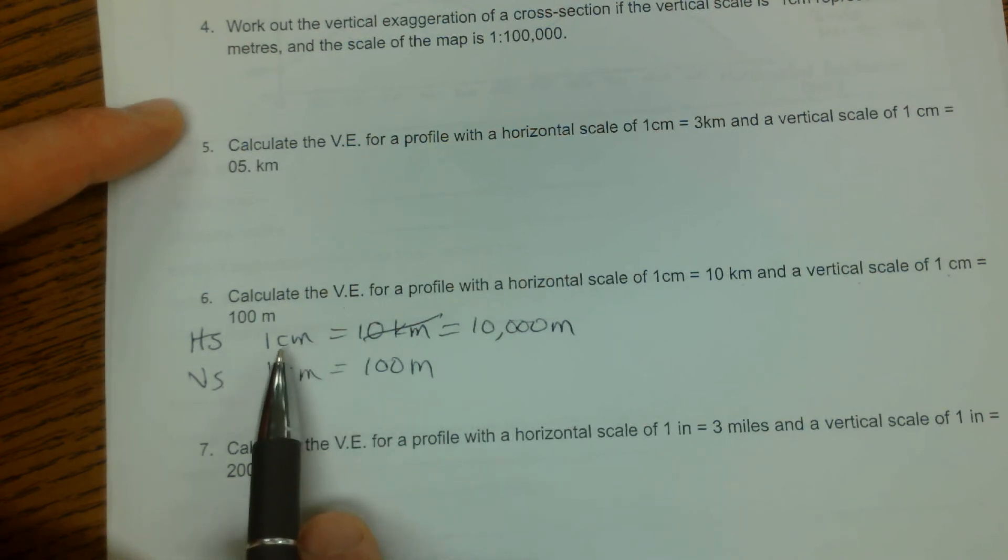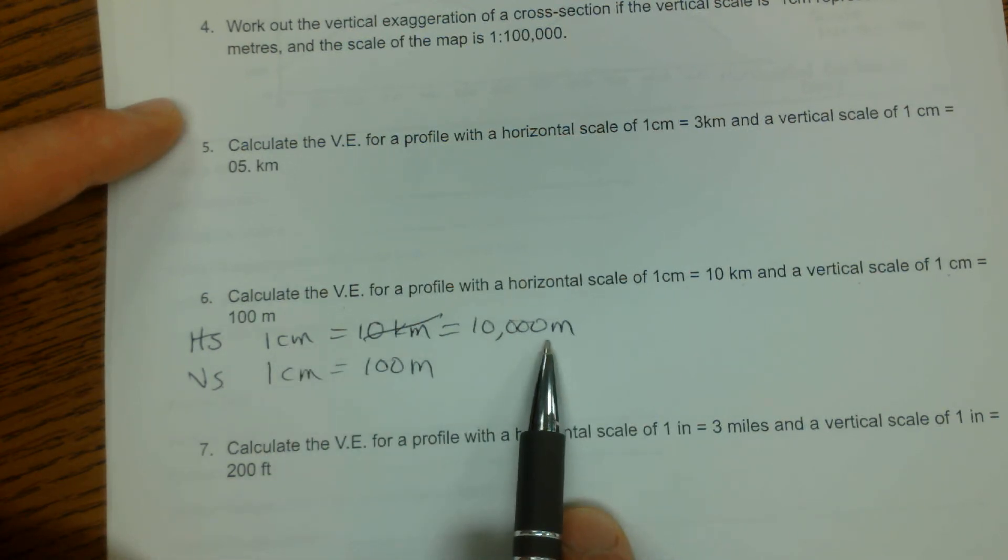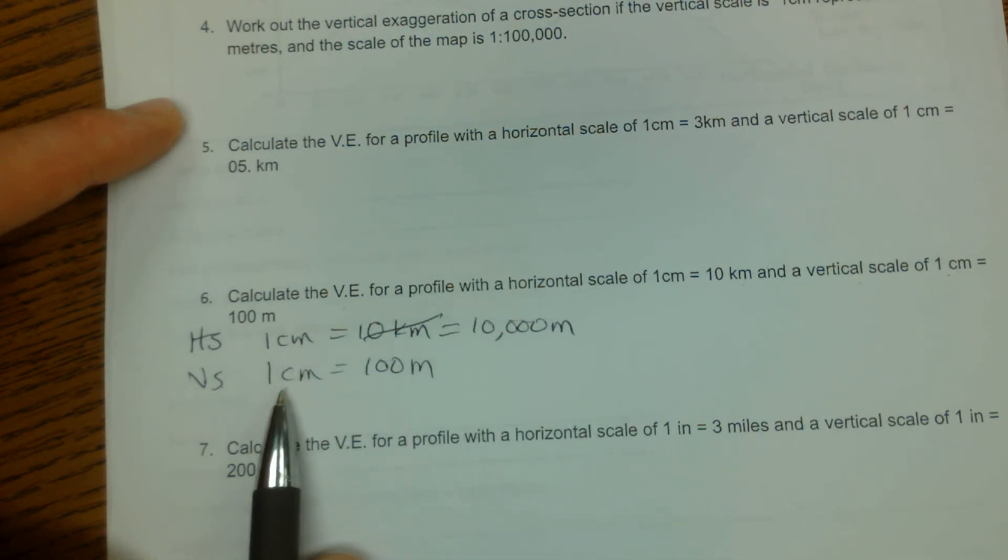So I'm going to use this scale here that says 1 centimeter is equal to 10,000 meters for my horizontal, and 1 centimeter equals 100 meters for my vertical.